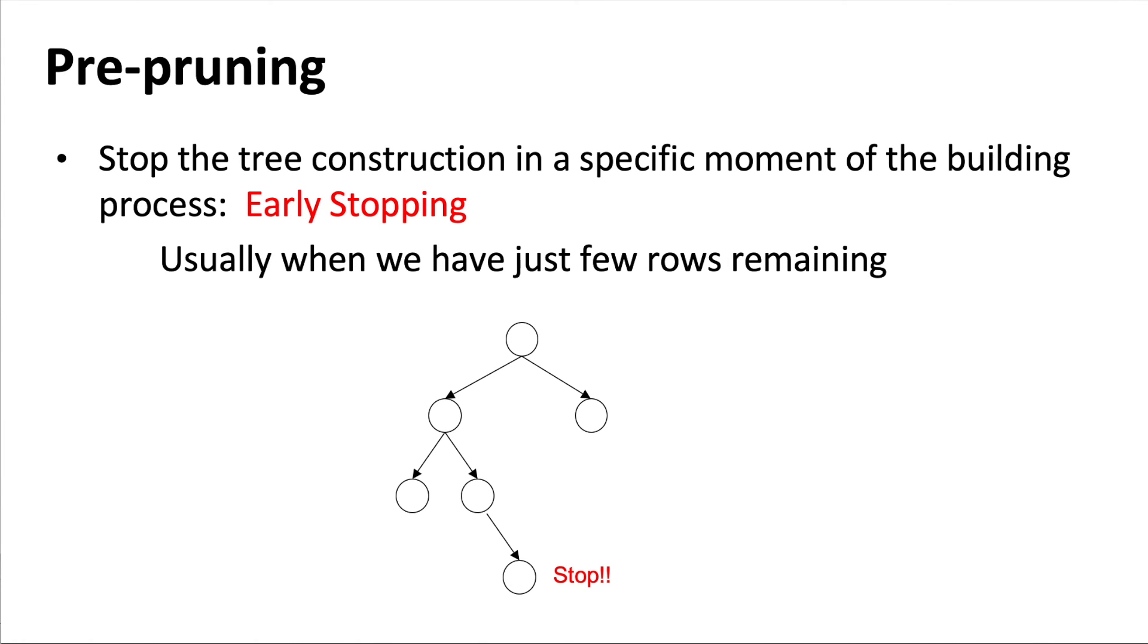We use the pre-pruning method when we stop the tree in a specific moment of the building process. This is also called early stopping. Recall from the previous video, when we were building a tree, we didn't take care of the amount of rows we were using in order to find the stopping criteria. In this case, we will. We will see an example later.